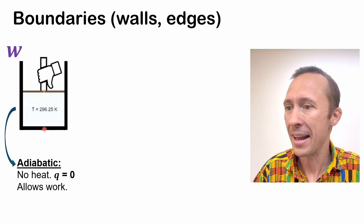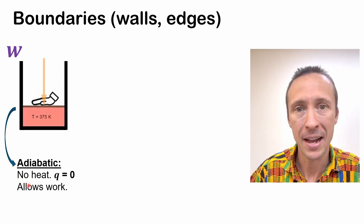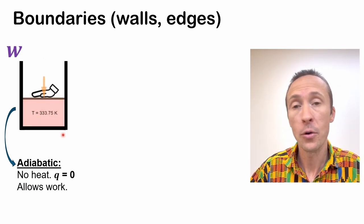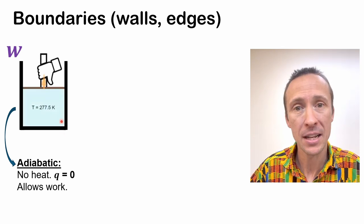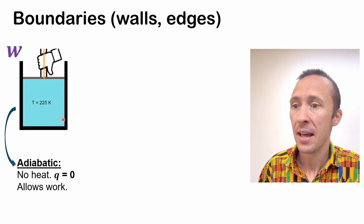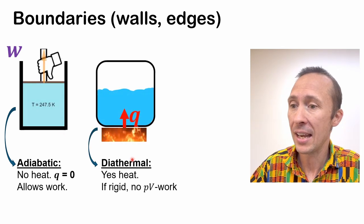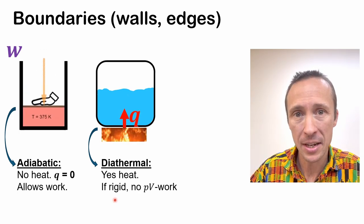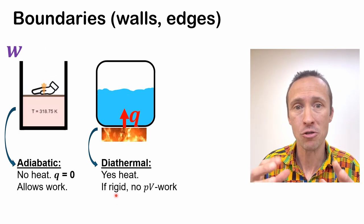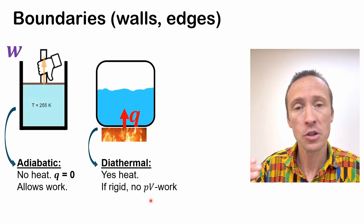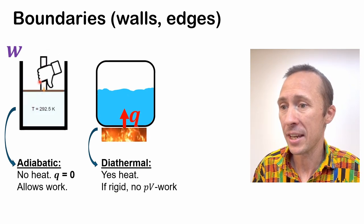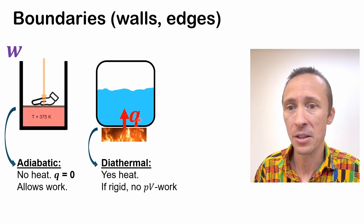So if we look at adiabatic here, we allow no heat transfer, but it does allow work to be done on or by the system. So we can still transfer energy as work. And if it's diathermal, we allow heat transfer going through. And if it's diathermal, but rigid, that means it can't expand or contract, then there's no pressure volume work that can be done. I've got lots of videos on what work is and whatnot. You can check those out if you like.